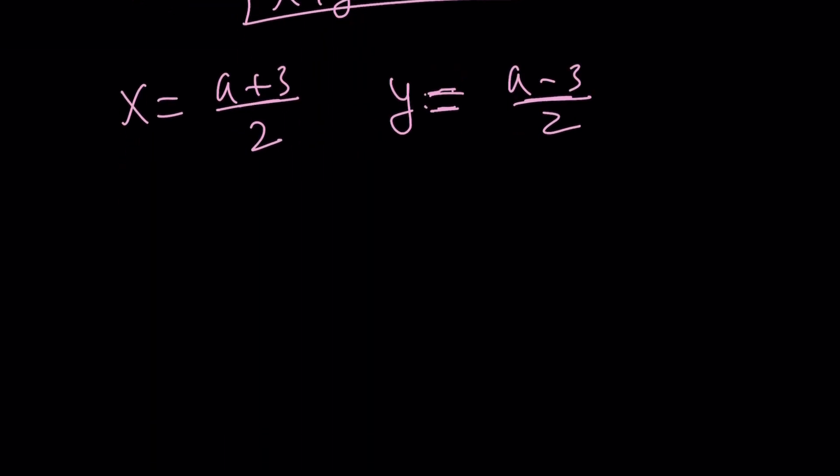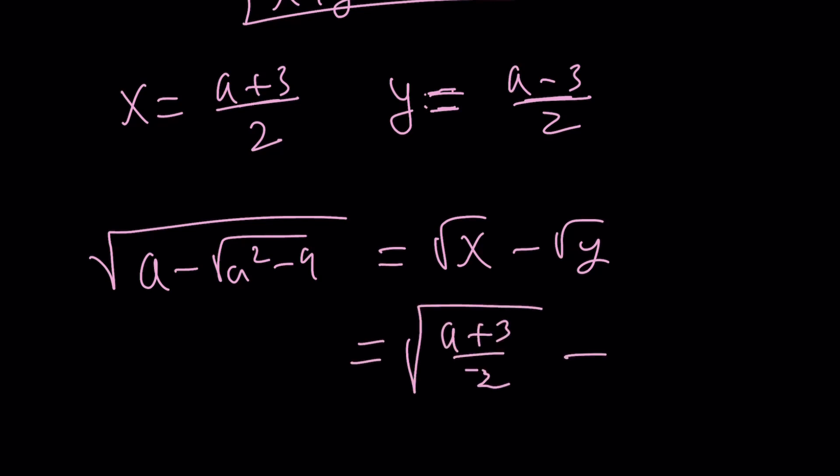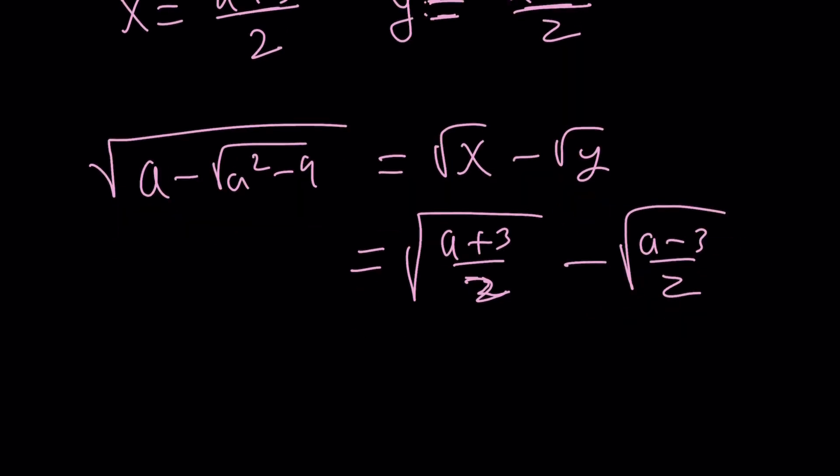And y is just going to be a minus three over two. Notice that the order matters here because of the minus sign. So x is bigger than y in this case. And since we assume that our expression is going to equal the square root of x minus the square root of y. From here, our expression simplifies as follows. Square root of a plus three over two minus the square root of a minus three over two.